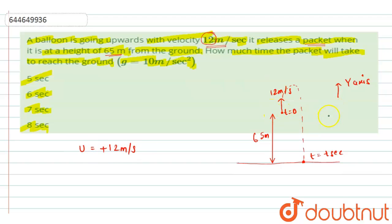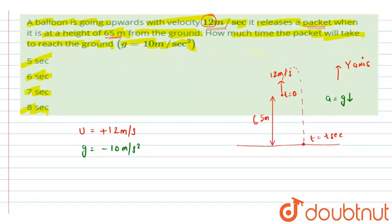The acceleration due to gravity would be acting in the downward direction, so g would be equal to minus 10 meter per second square. And furthermore, it is being displaced with the displacement of 65 meters, and the displacement would be in downward direction from this point till this point. The packet has to move 65 meter in displacement.